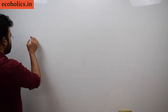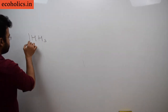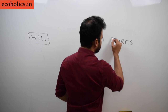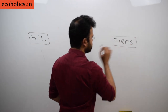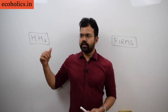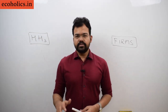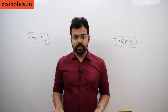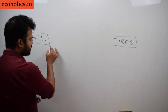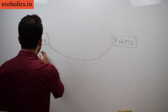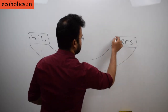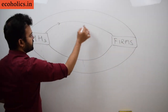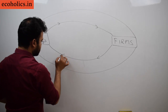Here we are drawing a simple circular flow. The first sector is households and the second sector is firms. In this two-sector economy, we will see the correlation and exchange between these two. Be careful about the arrows you are making because it is a circular flow, so arrows should be in tandem.